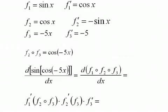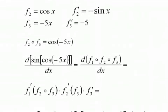Then I have to have f prime of 2, which is negative sine x with f3 stuck in, and then times f prime negative 5. And that's what I do right here.